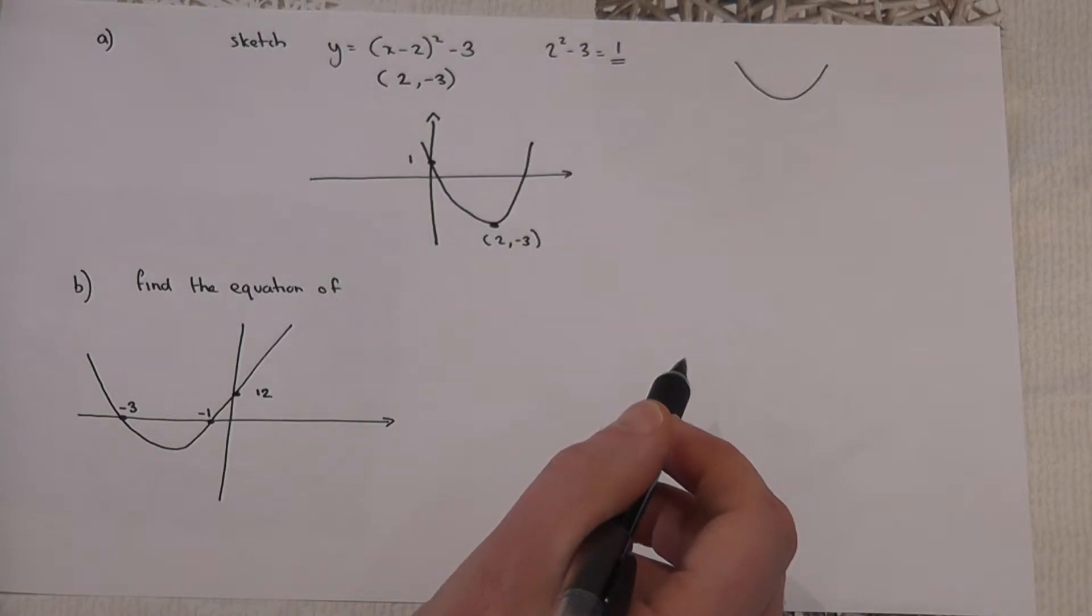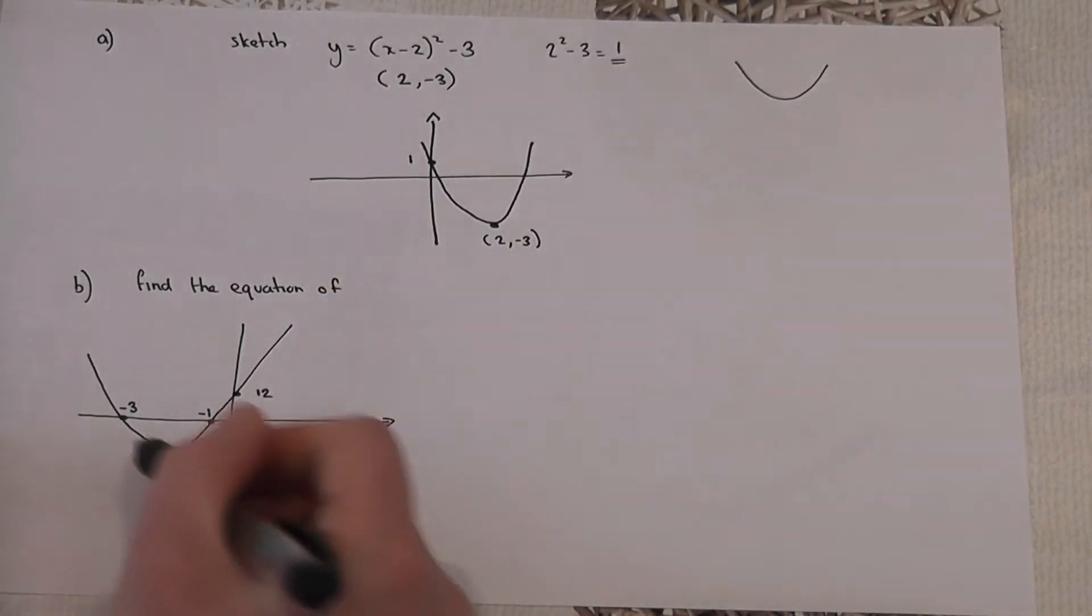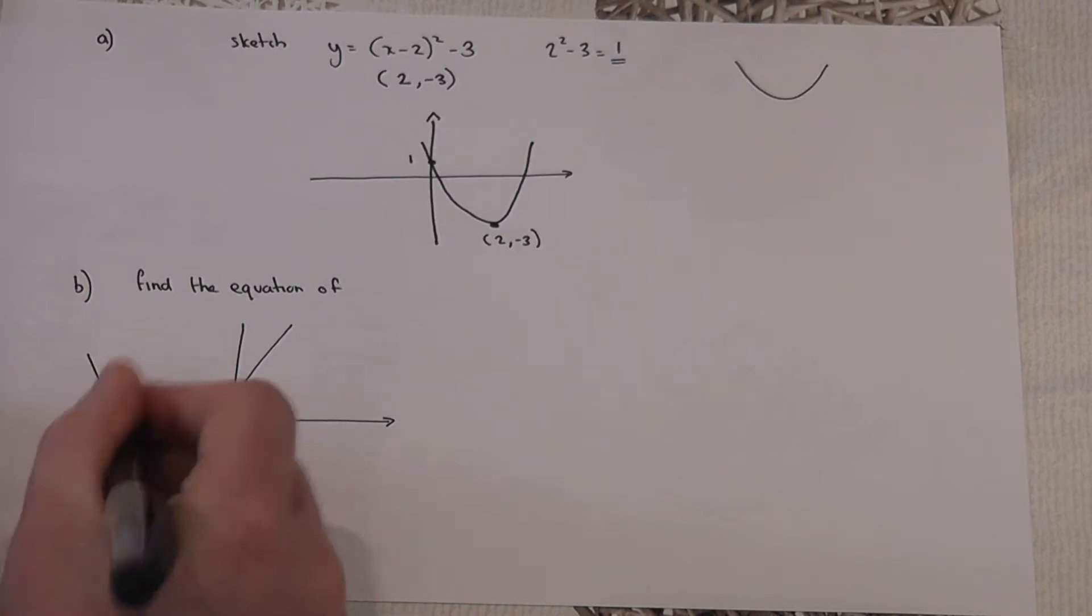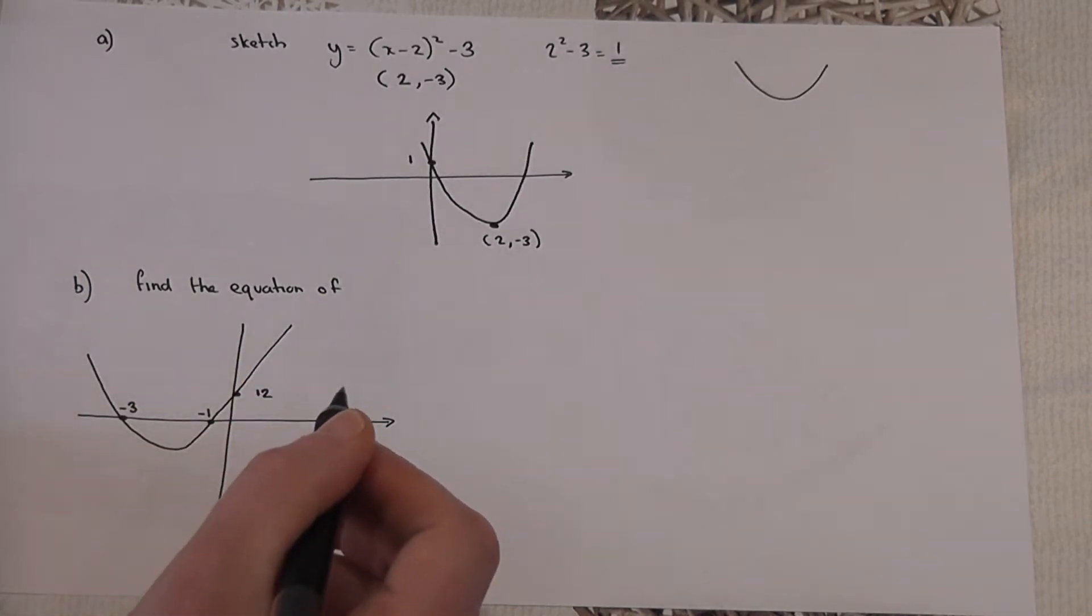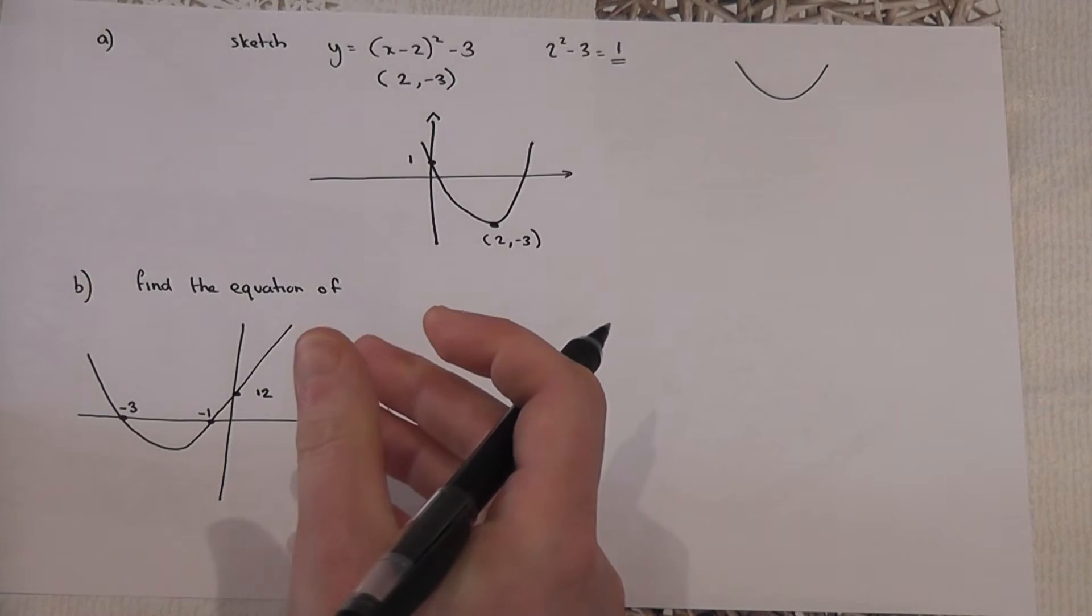Now in part B we're given the graph and we're told the two roots of the equation, and we're asked to find what the actual equation is.